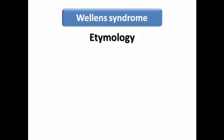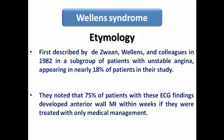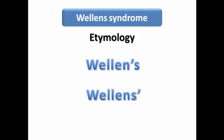We need to understand the etymology of Wellens' syndrome and the origin of this name. It was first described by Wellens and colleagues in 1982 in a subgroup of patients with unstable angina, appearing in about 80% of the patients in their study. They noted that 75% of those patients with symmetrical or biphasic T-wave, especially those with deep symmetrical T-wave inversion, developed anterior wall MI within weeks if treated with medical treatment alone. That's why they raised the flag that these patients are critical and need urgent revascularization. In literature it may be written as Wellens, Wellens's, or Wellens' syndrome — it is pronounced as 'Vallens,' not 'Wellens,' because it is a Dutch name, written with W but pronounced with V.